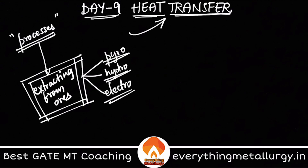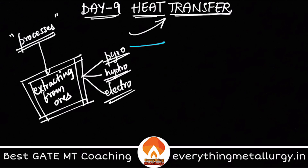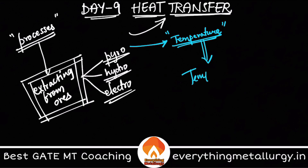There are three different kinds of extraction processes: pyro, hydro, and electro — that is, pyrometallurgy, hydrometallurgy, and electrometallurgy. These are classified based on their source of energy. In pyrometallurgy, the source of energy comes from temperature. If you have a reactor or a furnace, there will be something called a temperature gradient.